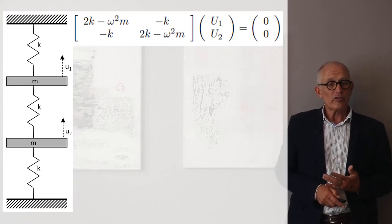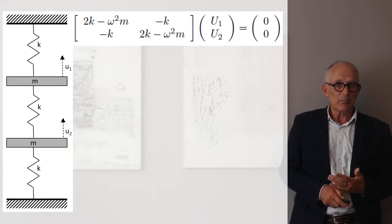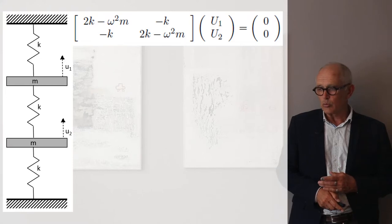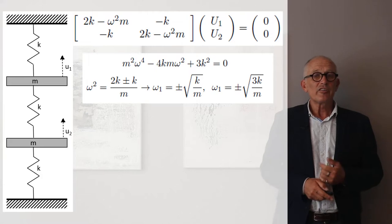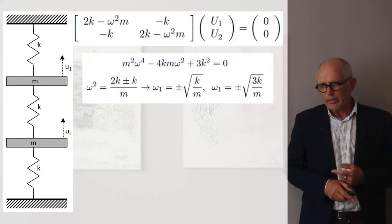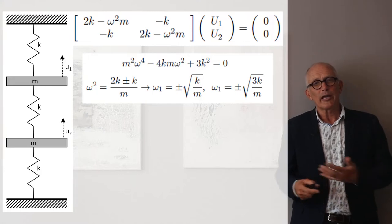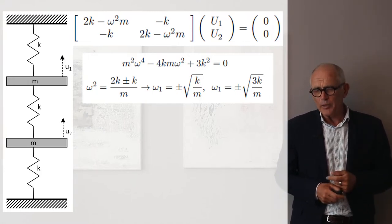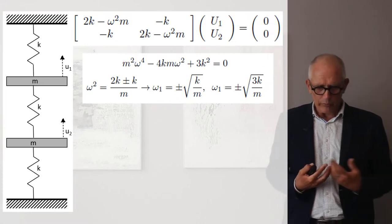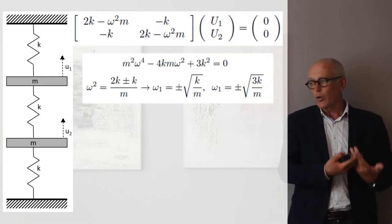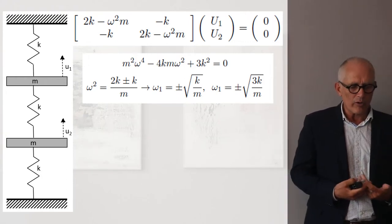So resonances of the system will occur when the determinant of this impedance matrix is equal to zero. And I invite you to do the full calculation by yourself, but it's easy to write the characteristic polynomial to find the solutions for omega square and from there to find the solution for omega 1 and omega 2. And we see that we have two resonance frequencies, one that is square root of k over m and one that is square root of 3k over m.